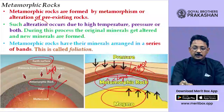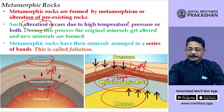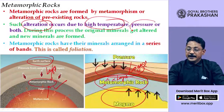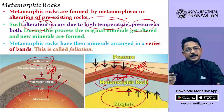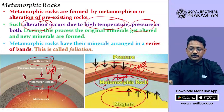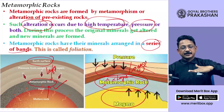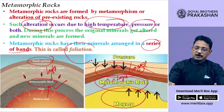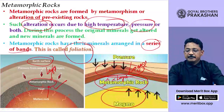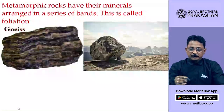Metamorphic rocks are formed by alteration — change caused by high temperature, great pressure, or both. During this process the original rock gets converted into a new rock. Metamorphic rocks have their minerals arranged in a series of bands — series of different colors and layers. This process is called foliation. When minerals get arranged in series, this process is called foliation.